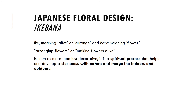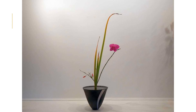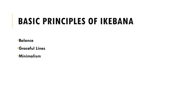Next we have Japanese floral design, greatly known as ikebana. 'Ike' means arrange and 'bana' means flower — so it means arranging flowers. The Japanese treat this practice as a spiritual process that helps one develop closeness with nature and merge the indoors and outdoors. Visible principles in ikebana are balance, graceful lines, and minimalism. Japanese value negative space greatly because for them it signifies silence and an emptiness full of possibilities.